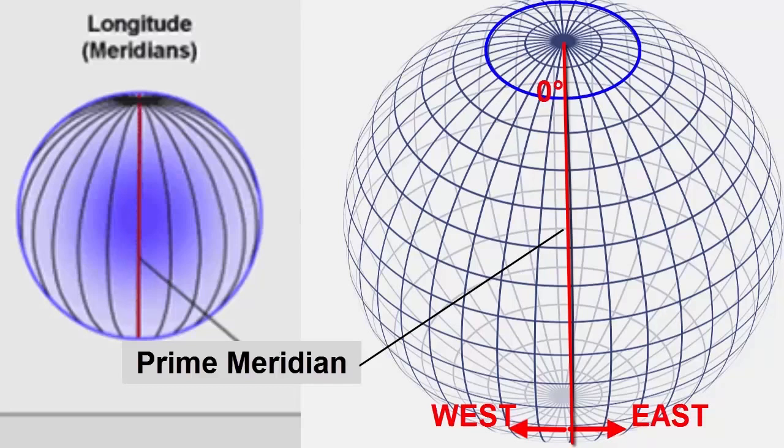Since a complete circle is 360 degrees, half of one is 180 degrees and one quarter is 90 degrees. If we travel one quarter of the way around the planet west of the Prime Meridian, we have travelled 90 degrees west longitude.